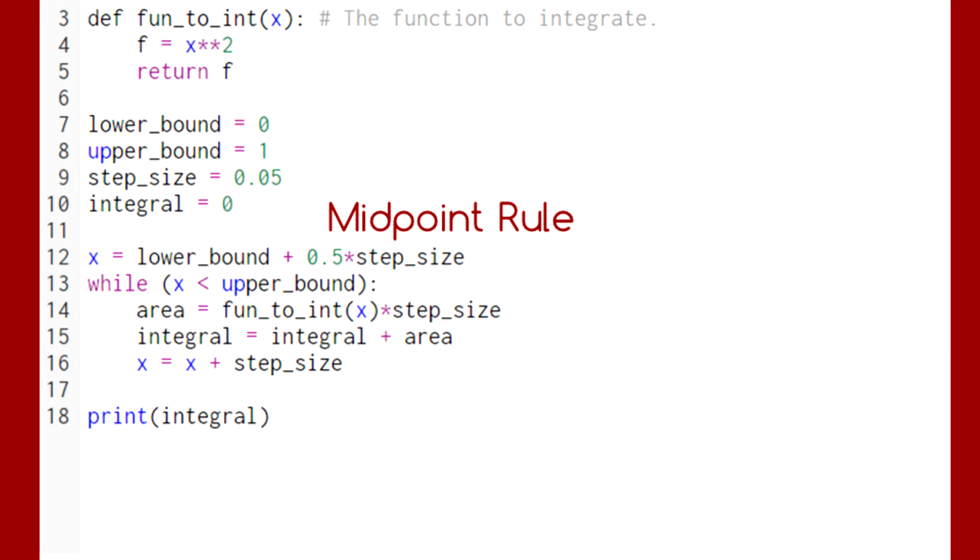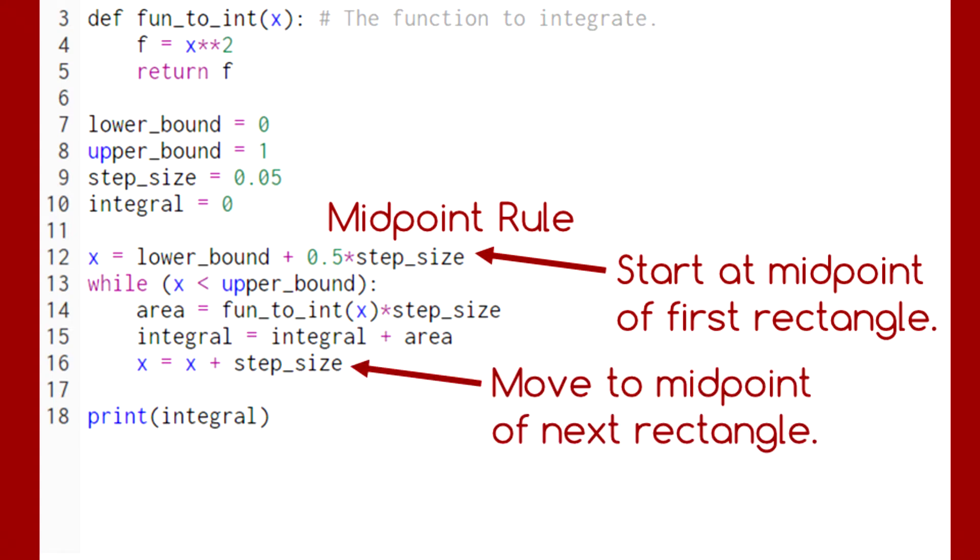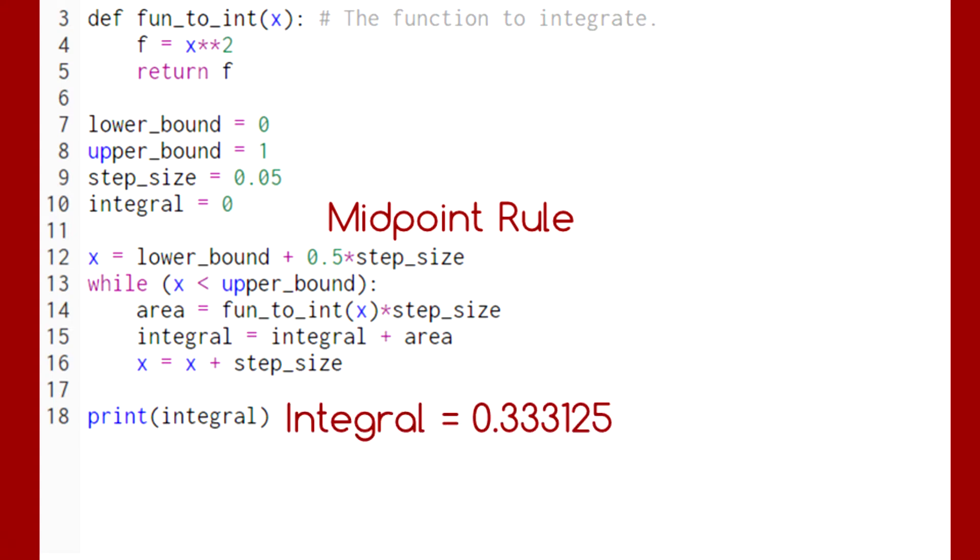In this integration loop, we're using the midpoint rule, since we're starting at the midpoint of the first interval. Each time we take a step, we'll be in the middle of the next interval. The answer we get is decently close to one-third, but not great.